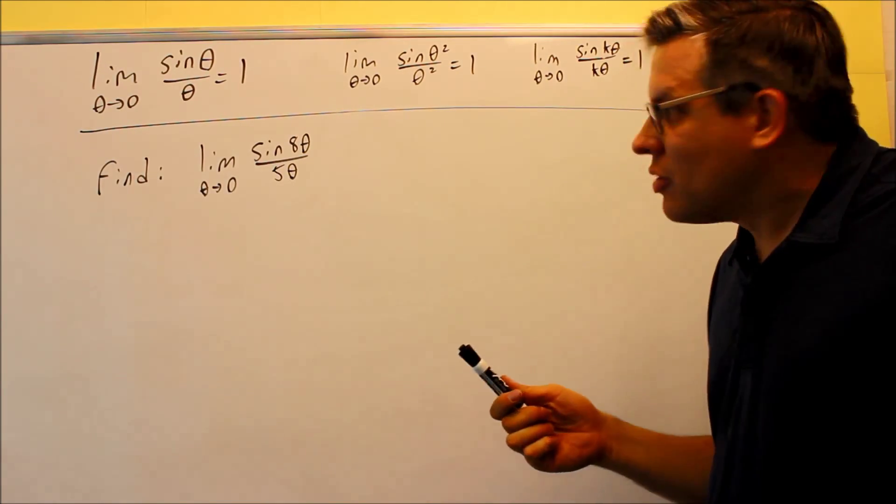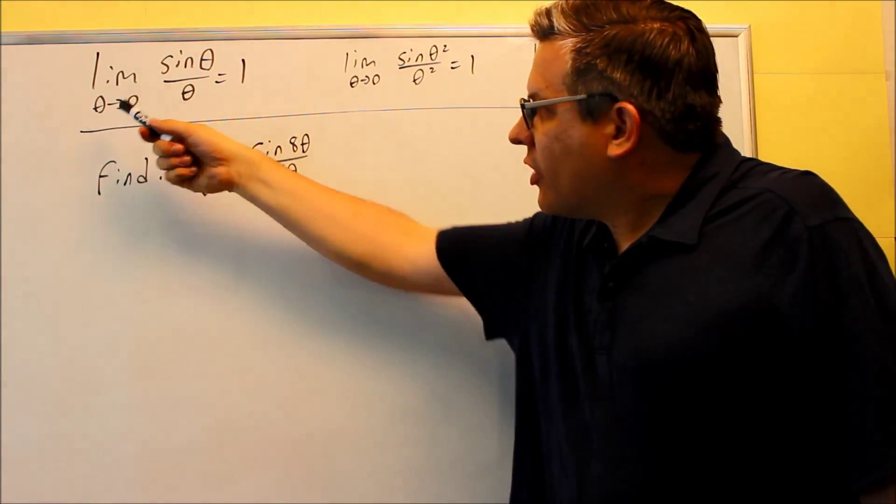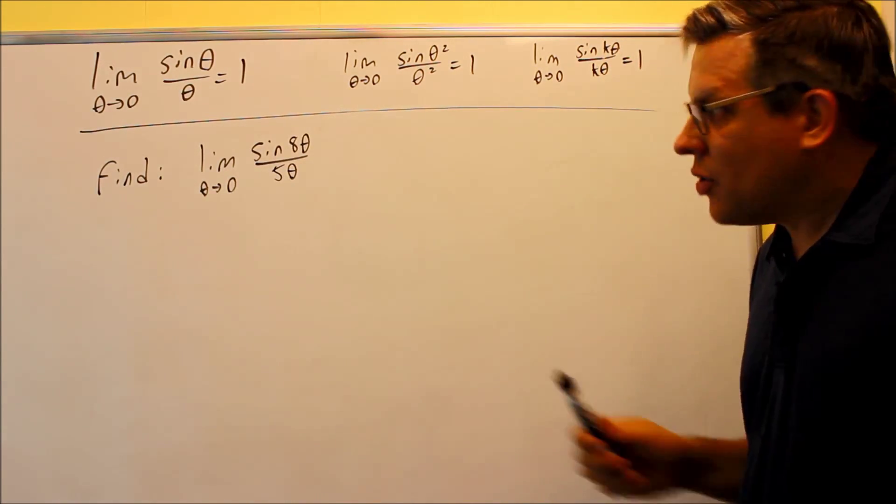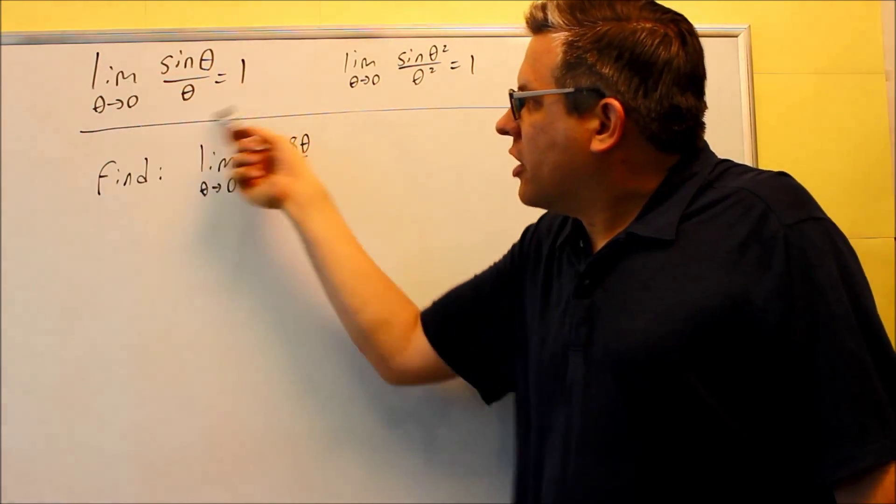You could also show that by tables, by testing numbers that are very close to zero from both sides. That will also confirm that the limit is going to be approaching one. So this is the main special limit.